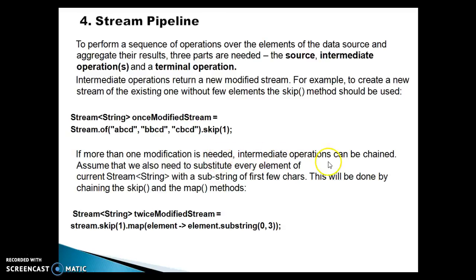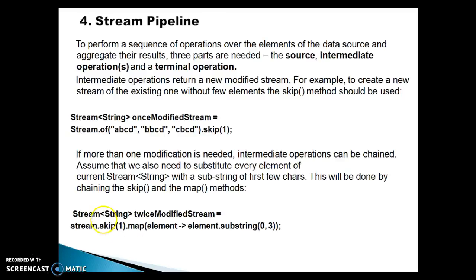If more than one modification is needed, intermediate operations can be chained. Assume that we also need to substitute every element of the current stream with a sub-stream of first few characters — this will be done by chaining the skip and map methods. So we get twice-modified stream. We have a stream and we call stream.skip to skip the first element, then we apply the map operation — skip is an intermediate operation, map is also an intermediate operation.